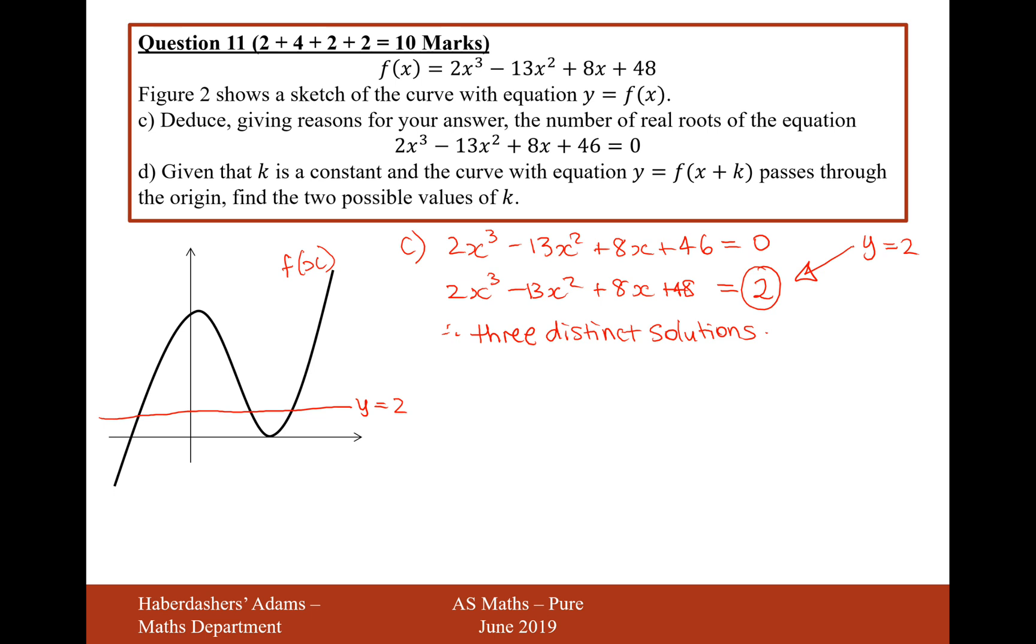Moving on to part D. Given that k is a constant, and the curve of the equation y equals f of x plus k passes through the origin, find the two possible values of k. What I need to do then is I need to move my graph up or down by a certain amount. At the moment, it's minus 3 over 2 and 4. And, remember, when it's f of x plus k inside the brackets, then it's the opposite.